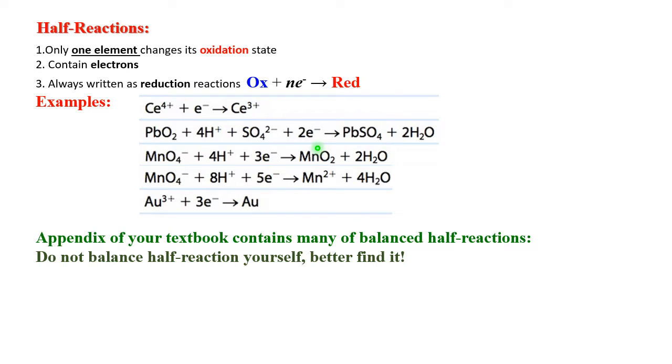MnO₄⁻, oxidation number of manganese is 7, here takes 3 electrons to become MnO₂, oxidation number is 4. The same MnO₄⁻ with oxidation number 7 can take 5 electrons to become Mn²+. Of course, it's 2+, oxidation number. Gold Au³+ takes 3 electrons to become elemental gold; element has oxidation number of zero.